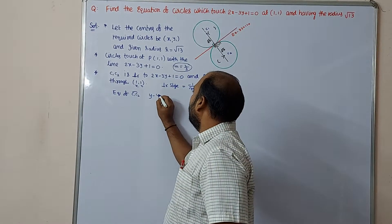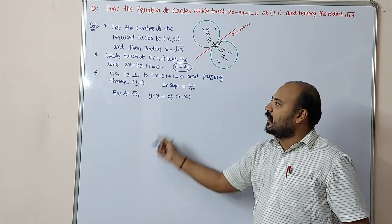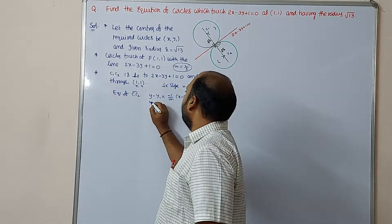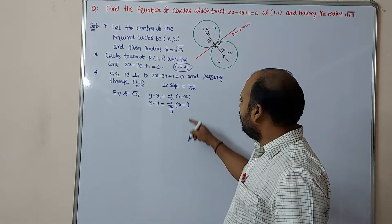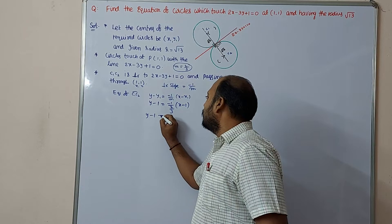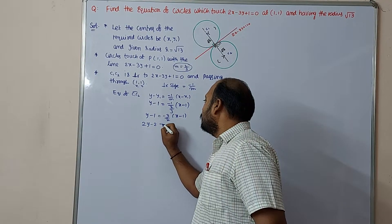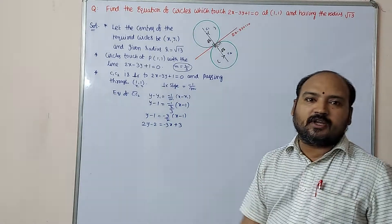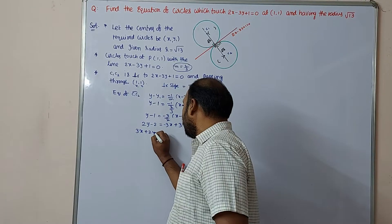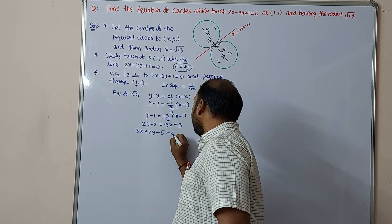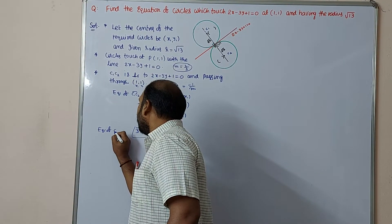Using y minus y1 equals minus 1 by m into x minus x1: y minus 1 equals minus 3 by 2 into x minus 1. Cross-multiplying: 2y minus 2 equals minus 3x plus 3, which gives 3x plus 2y minus 5 equal to 0. This is the equation of line C1C2.